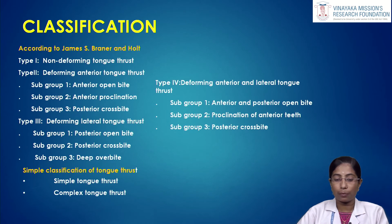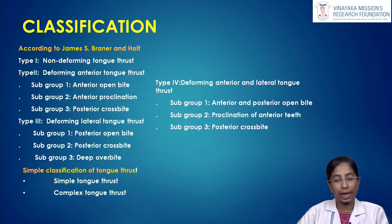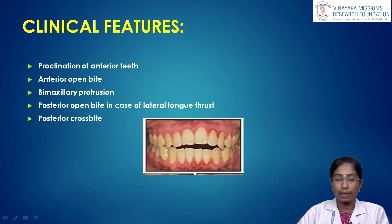Type 4 according to James is deforming anterior and lateral tongue thrust, further classified into subgroup 1 (anterior and posterior cross bite), subgroup 2 (proclination of anterior teeth), and subgroup 3 (posterior cross bite). A simple classification of tongue thrust divides it into simple or complex tongue thrust. Clinical features of tongue thrusting habit include proclined upper anteriors, anterior open bite, maxillary protrusion, and posterior open bite in cases of lateral tongue thrust.